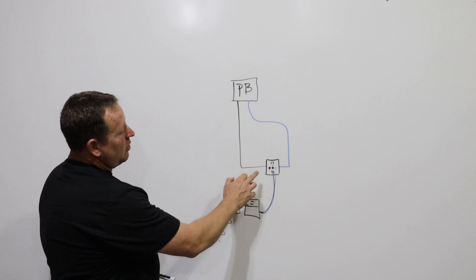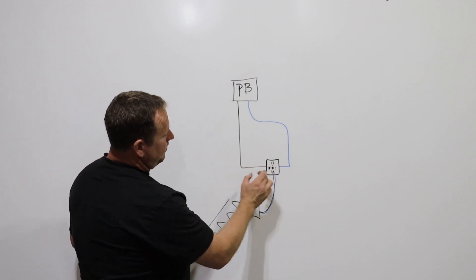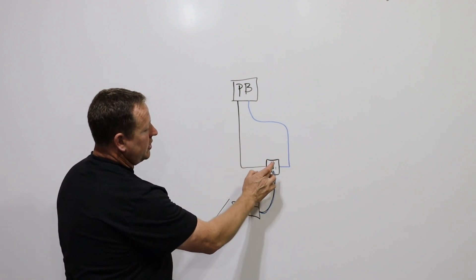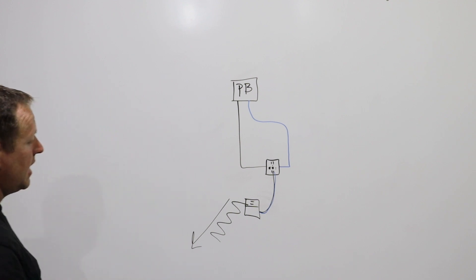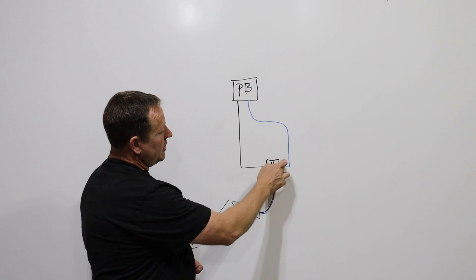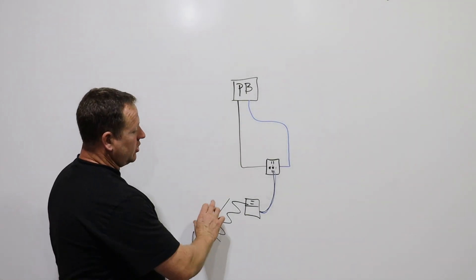What this ground fault circuit interrupter is going to say is, there is an unequal amount of current coming through me, and so it's going to trip. When it trips, it just cuts power to the circuit. It cuts power to the circuit almost instantly, so you don't get shocked.